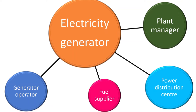The plant manager typically needs an overview of all generators and needs the generator to push information periodically. The power distribution center needs to know how generators are performing to plan distribution. The fuel supplier may be interested in fuel consumption. In a client-server architecture, all these parties send requests to the central generator, and it responds when it can — but again, this is totally unrealistic.